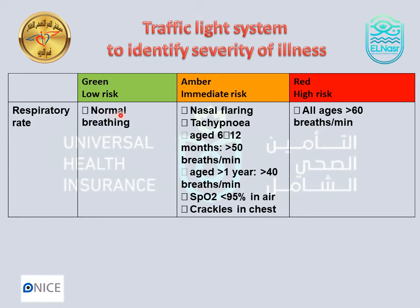About the respiratory rate: in the green area it is normal. In the yellow area, there may be tachypnea. For children below 1 year, more than 50 breaths per minute is considered tachypnea. For children 1 year and over, more than 40 breaths per minute is considered tachypnea. Oxygen saturation less than 95% and heart rate more than 60 in the green area — all of these considered tachypnea in the red zone.